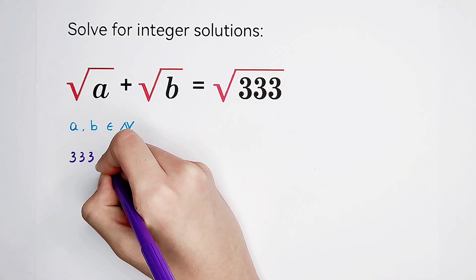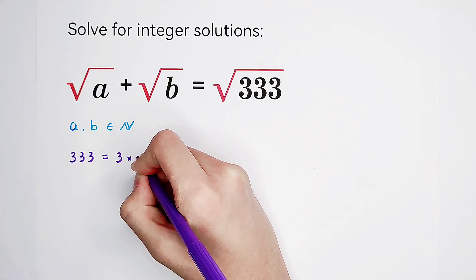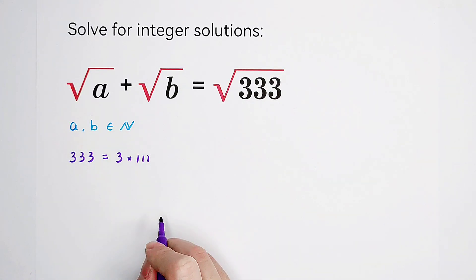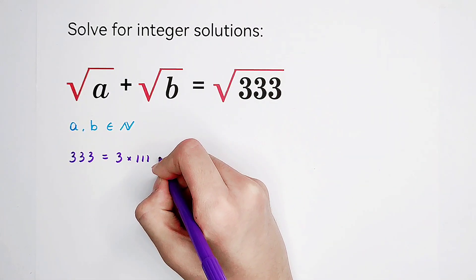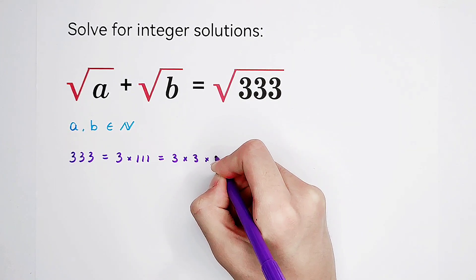333 can be written as 3 times 111. And 111 is 3 times 37. So it is 3 times 3 times 37.